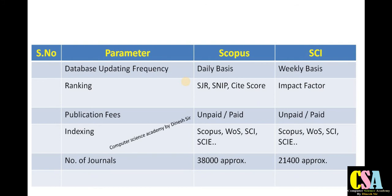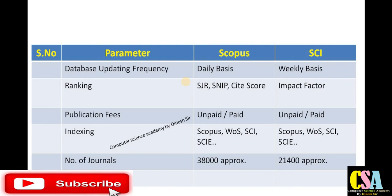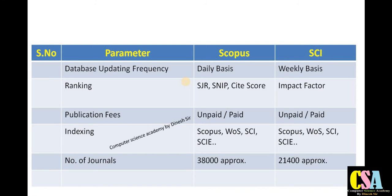It is not compulsory that all journals are only Scopus or only SCI — a single journal can be both Scopus indexed and SCI indexed. You may find one journal in your subject area listed in both. Indexing is granted when a journal follows that particular database's guidelines. Regarding publication fees, there is big confusion — in both Scopus and SCI index journals, and even in UGC care, fees depend on the journal type. Both paid and free journals are available in all categories.